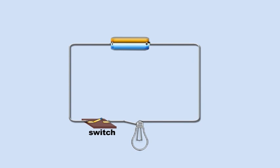You can use a switch to turn the light bulb on and off. When the switch is open, it creates a break in the circuit so the bulb doesn't light up. But when the switch is closed, the circuit is complete and the bulb lights up.